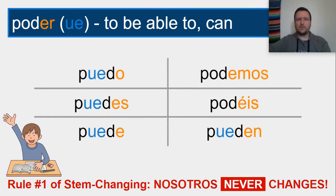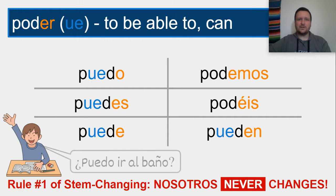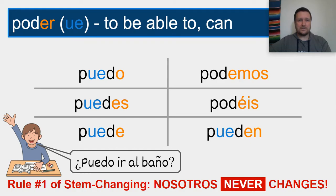All right. The forms of poder are: puedo, puedes, puede, podemos, podéis, pueden. I started with this verb because it's one we're familiar with using in class. How many times have you heard puedo ir al baño — can I go to the bathroom? The O changes to UE in all of the singular forms and the third person plural, but NOSOTROS never changes.